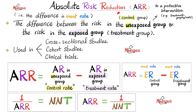Absolute risk reduction — it's a reduction, so I am going to subtract. If you want your result to be a positive number, you subtract the small number from the bigger number. In cases of reduction, the event rate in those exposed to the good thing will be lower, so it's the event rate in the control group minus the event rate in the treatment group. And if you find the reciprocal of the absolute risk reduction, it's the number needed to treat. Conversely, the reciprocal of number needed to treat is the absolute risk reduction.